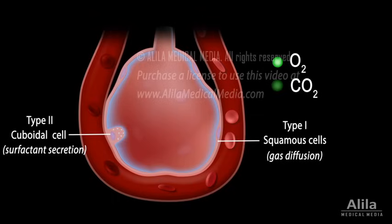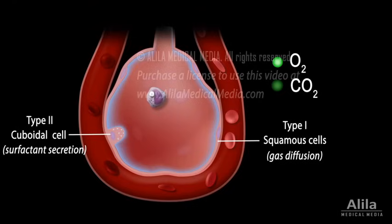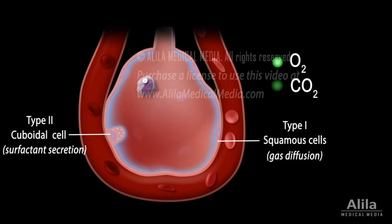The alveoli also house a large number of macrophages, ready to engulf any inhaled particles that manage to get past previous barriers to the lungs. The debris-laden macrophages then ride the mucociliary escalator up to the throat to be swallowed and digested.